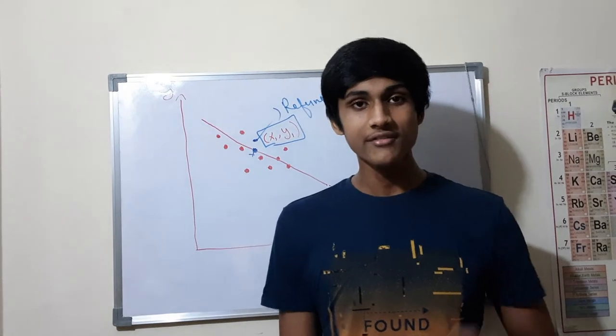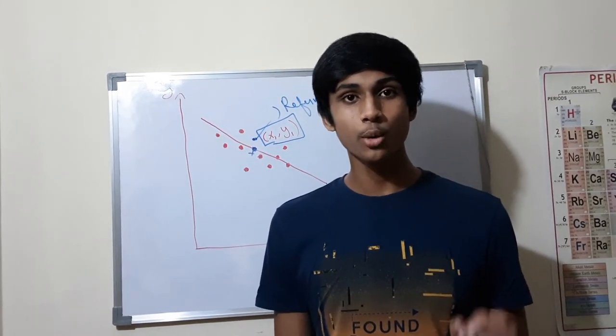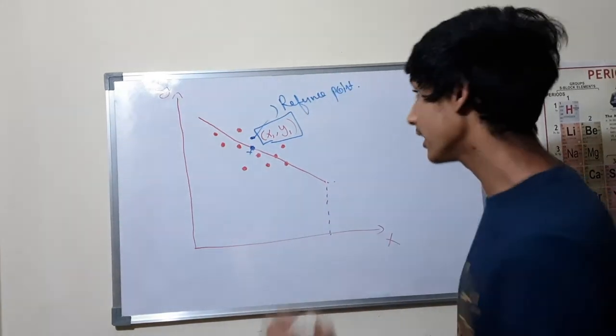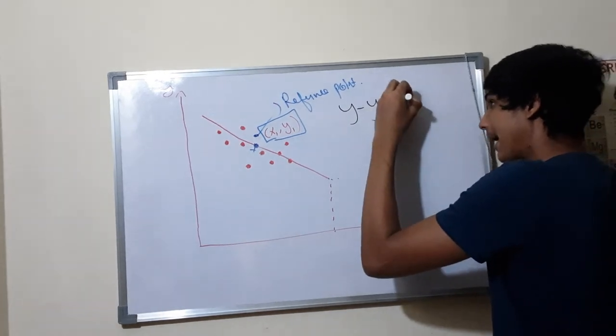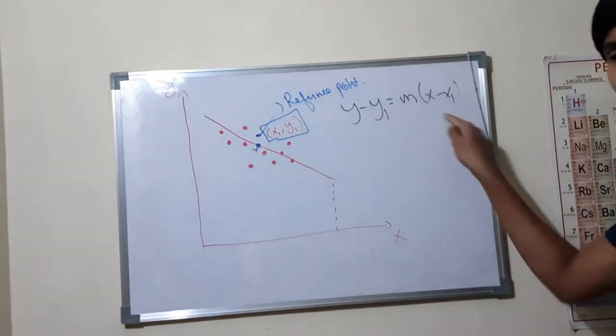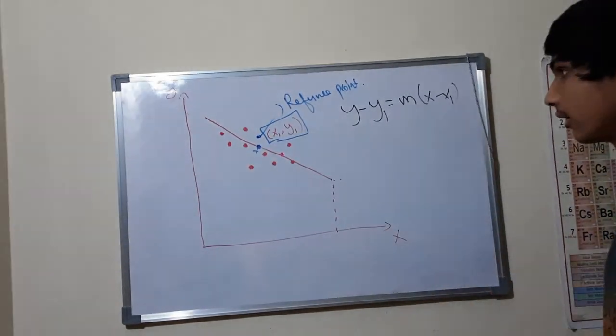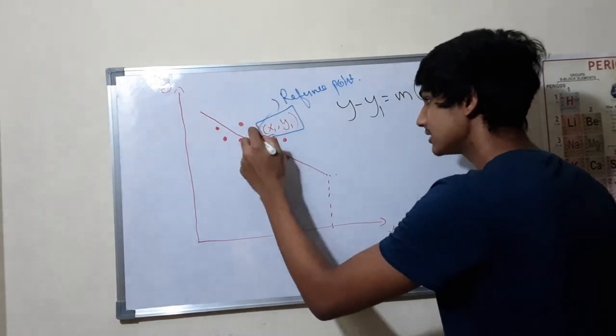Now that we know the average slope we can construct a line of best fit using the point slope form of a line which says that y minus y1 equals the slope m into x minus x1. So how do we choose this x1 and y1? Well once again we make our line pass through this reference point.